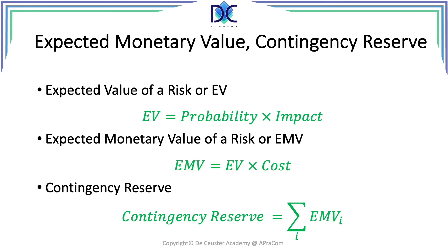The last element related to risk management is the calculation of the contingency reserve. This is by definition the sum of all expected monetary values calculated. An important item to note: when we look at the expected value or expected monetary value, we multiply the impact by the probability. But when the risk event actually happens, the actual impact will occur and the probability becomes 100%. In the two examples shown, when the risk events are occurring, the real delay will be 20 days with a total cost of $20,000 — not 6 days and $6,000.